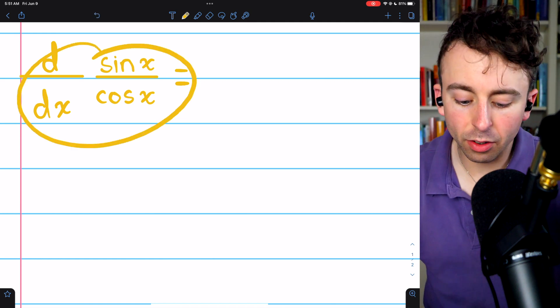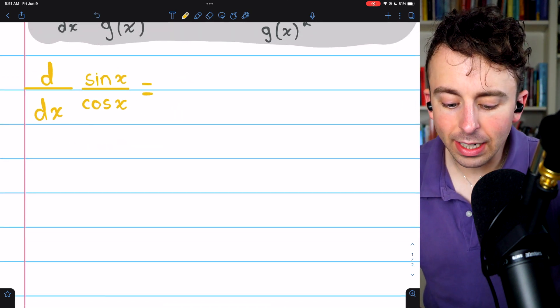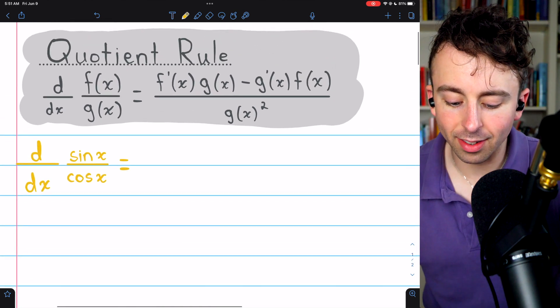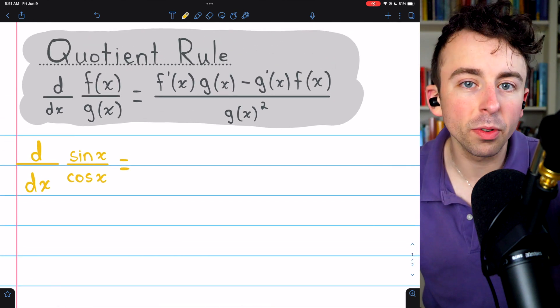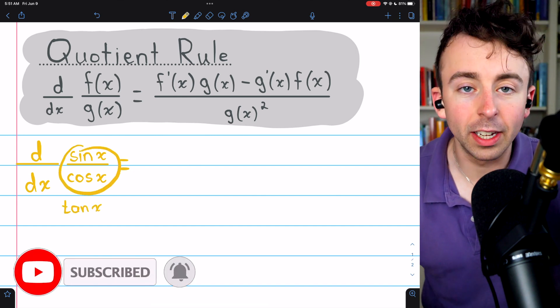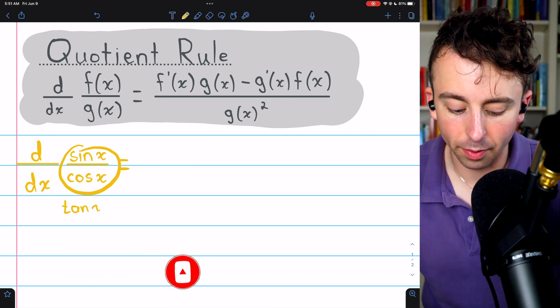To take the derivative of sine x over cosine x, we simply need to use the quotient rule because this is a quotient of functions. It's sine x divided by cosine x. This is of course the same as tangent of x, so we are here finding the derivative of tangent.